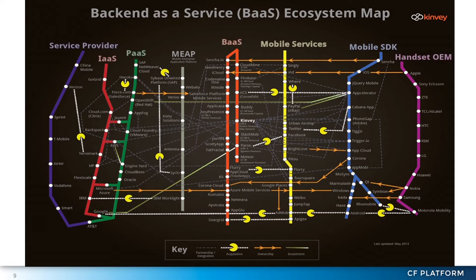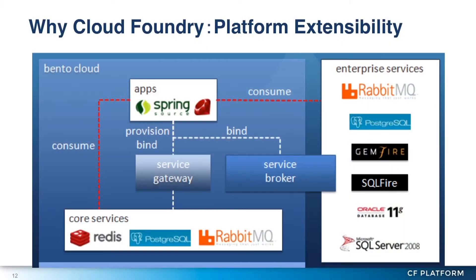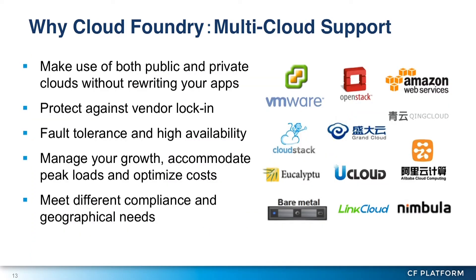There is a new area called backend as a service — a lightweight middleware between the application and the infrastructure. However, what about scalability? What about portability? For this, we need additional help. Cloud Foundry can do that. We chose Cloud Foundry because of the platform extensibility, because we want to incorporate all the necessary mobile services into our PaaS offering, and we also need multiple cloud support.